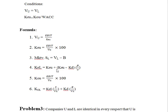The formula for KEL is KEU plus a premium. KEU and KOU are the same formula. The last requirement is KUL, the overall cost of capital of the levered firm. KUL equals KEL times S divided by V of the levered firm, plus KD times B divided by V of the levered firm.